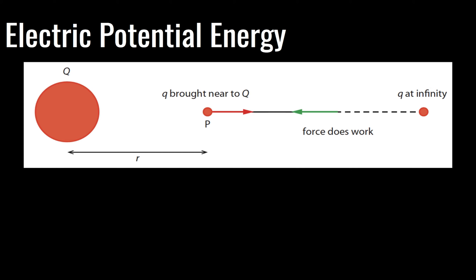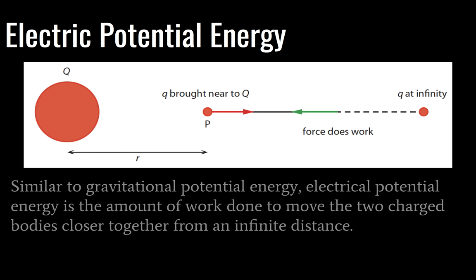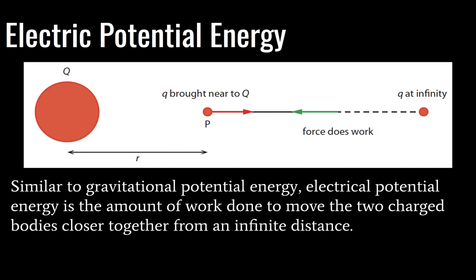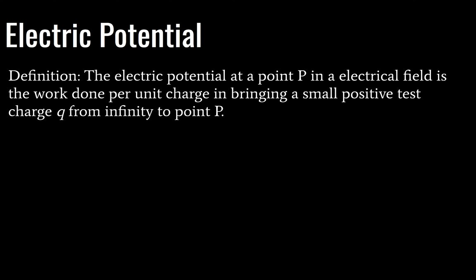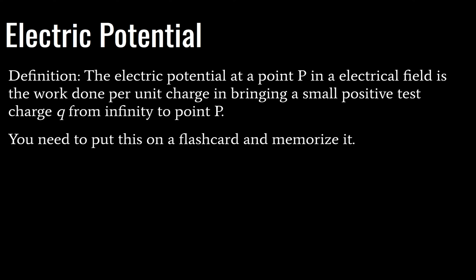Here we have the diagram for electric potential energy, which should look very familiar — just like gravitational potential energy. There are a lot of parallels, which is why we teach them together in topic 10. Electric potential energy is the amount of work done to move two charged bodies closer together from an infinite distance. The electric potential at a point P in an electrical field is the work done per unit charge in bringing a small positive test charge Q from infinity to point P, as shown in the previous diagram.